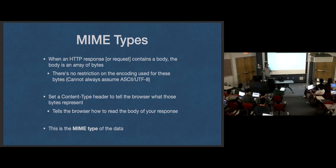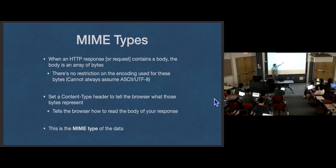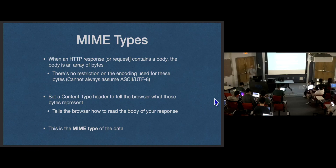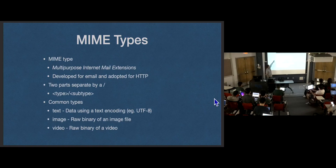Anything we can encode in bytes, we can send in the body of a response or request. We need the headers to say what that type is, and we're going to do that through the content-type header. The content-type header is going to specify the MIME type, and that's how the receiver is going to know how to interpret those bytes. Content length tells you how many bytes to read; content type tells you how to decode those bytes — what do these bytes actually represent? MIME type comes from Multi-Purpose Internet Mail Extension. It's a very old extension originally used for email, adopted by HTTP.